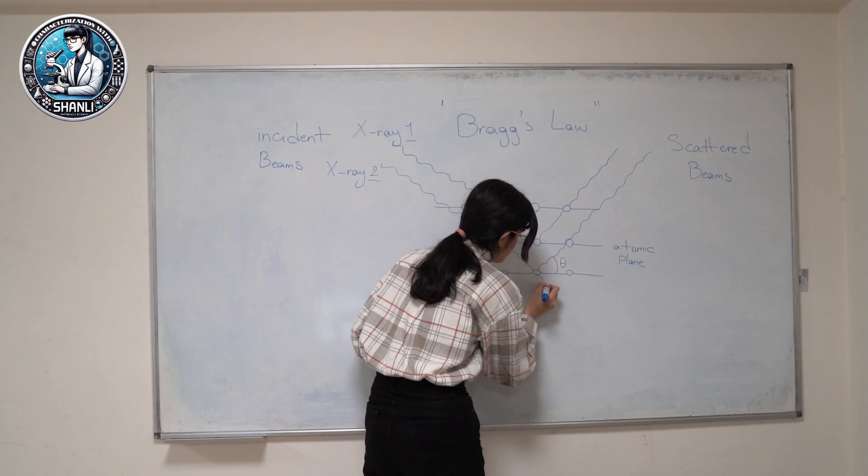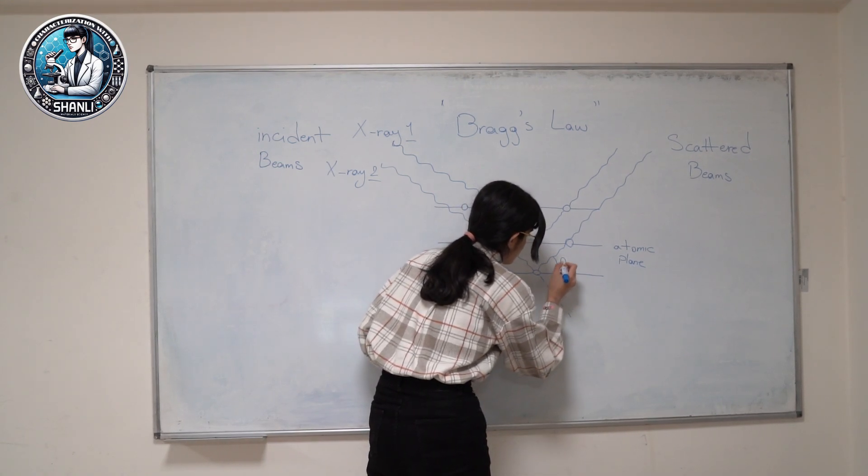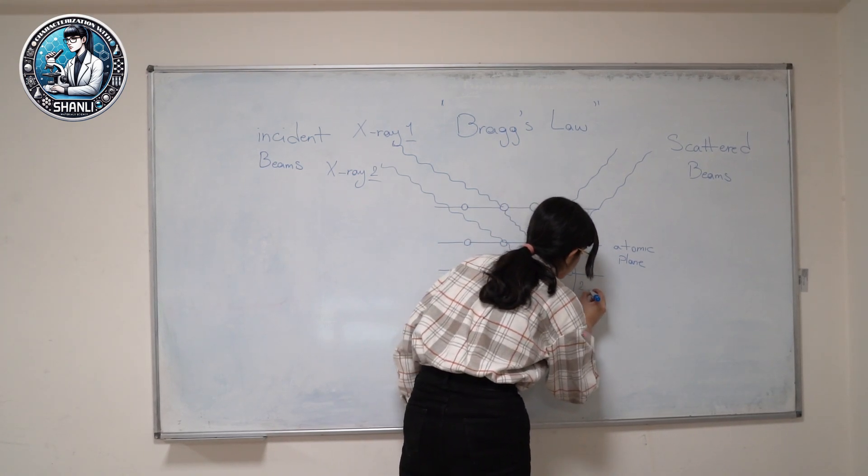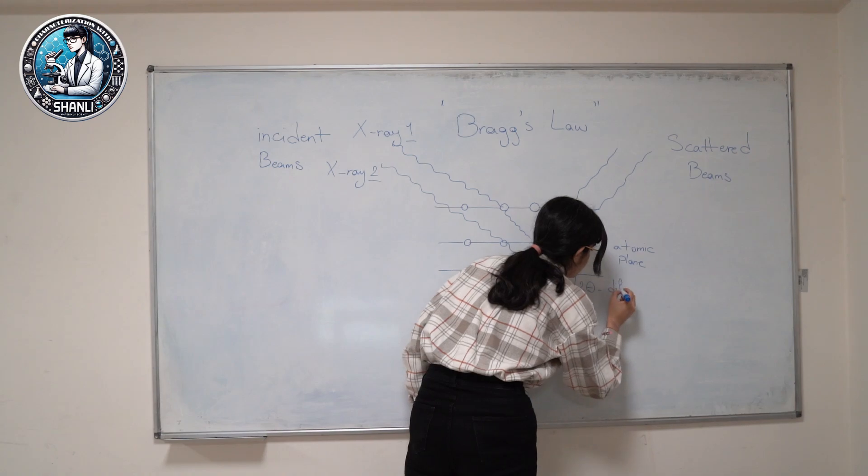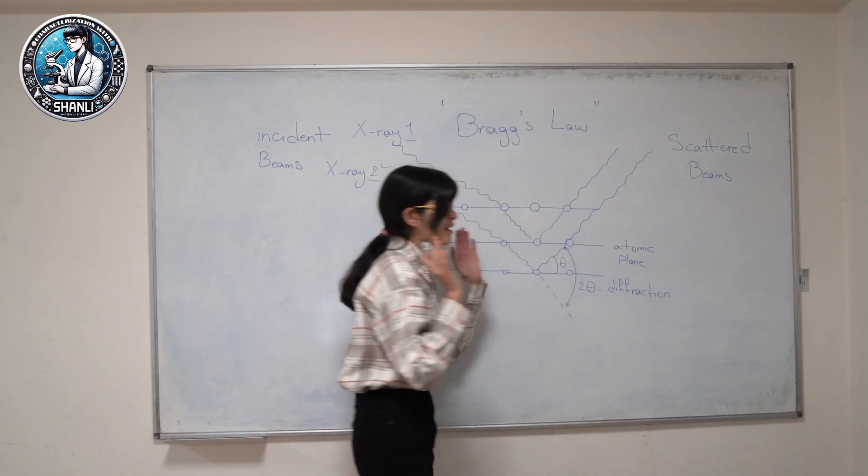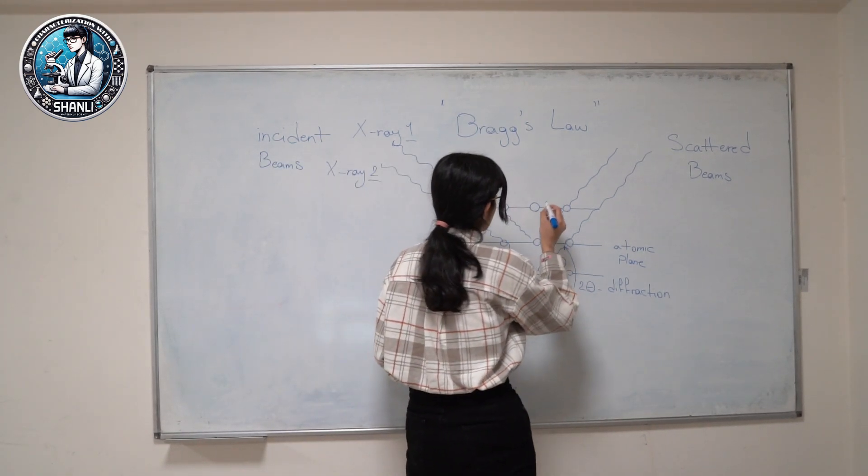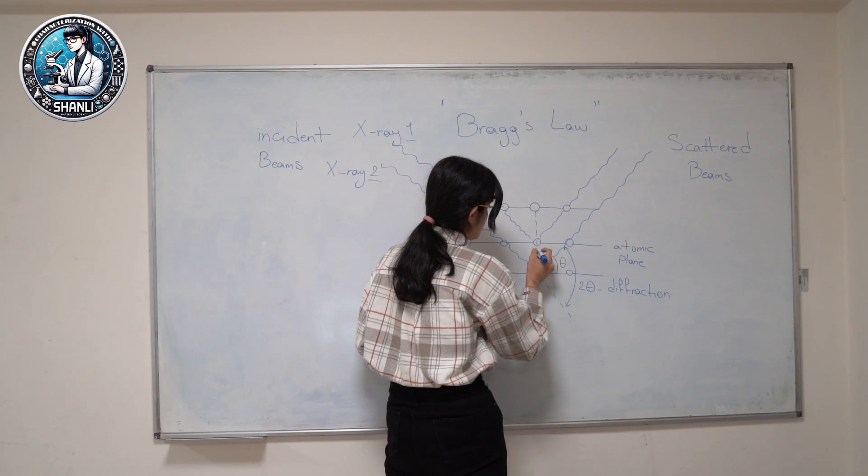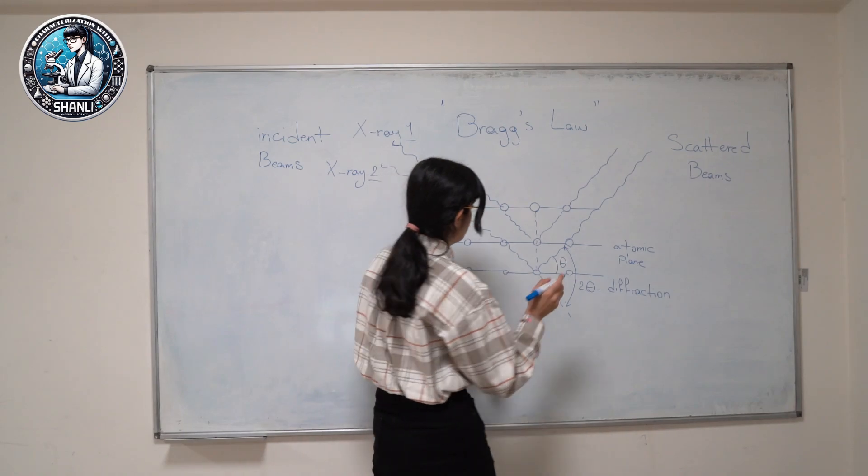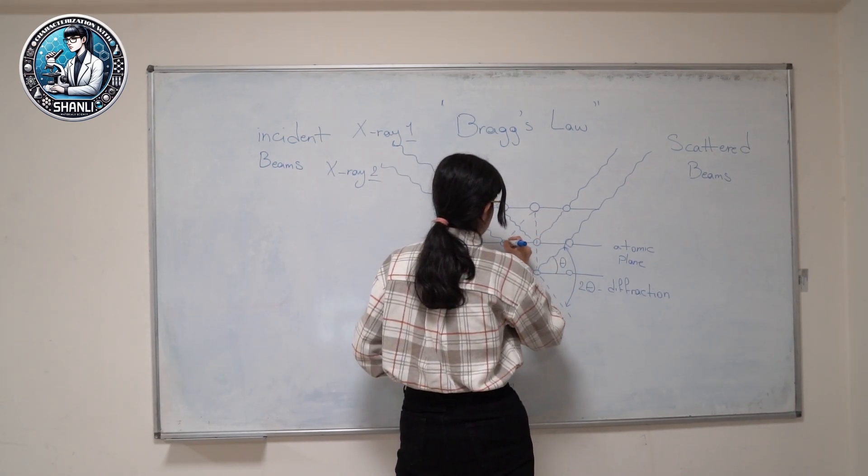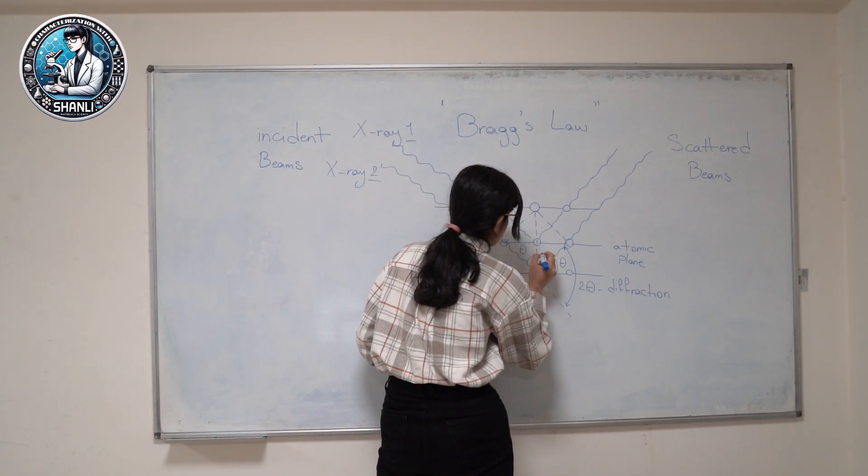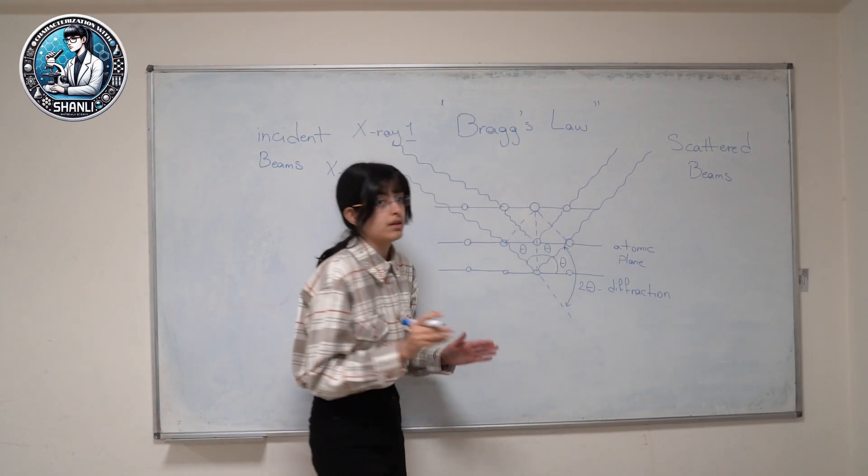Also, let's continue this beam. So this angle is going to be our two theta diffraction angle. Let's draw a perpendicular line here, and another one here. This is going to be our theta, and also the other one, theta.